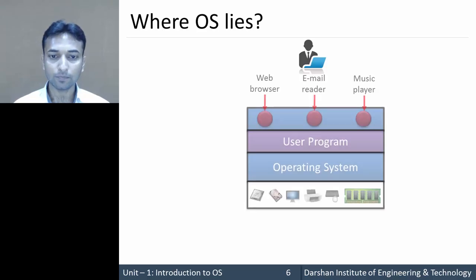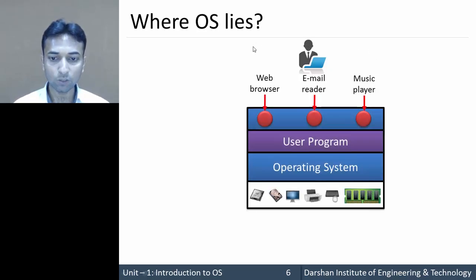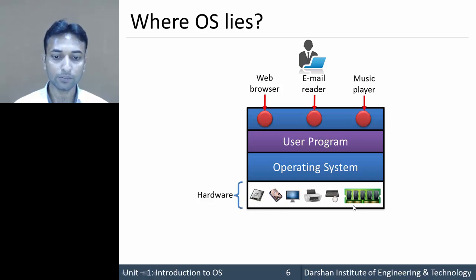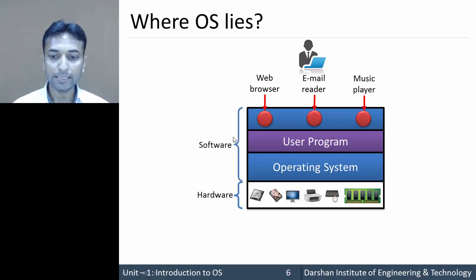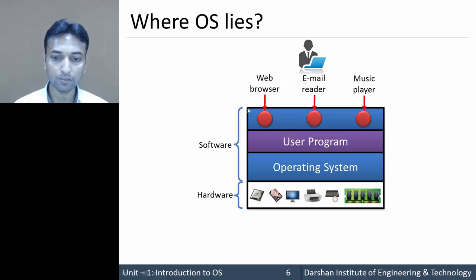Now, where does the operating system lie? Let us consider the architecture of our computer system. In this architecture, the hardware resources lie at the bottom layer — processor, hard disk, monitor, printer, mouse, keyboard, and RAM are all at this bottom layer. Above the hardware layer lies the software. This software may be user programs or the operating system — these non-physical parts lie on top of the hardware.